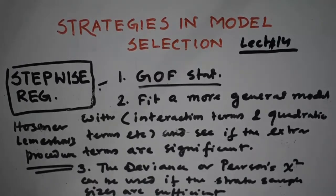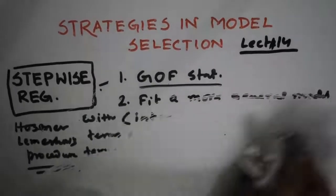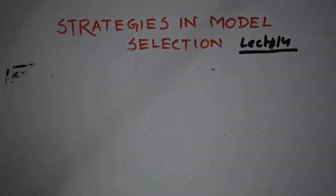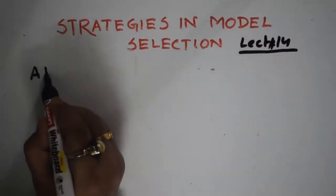So this is the method to select influential or important covariates or explanatory variables. Before ending this topic, I discuss another criterion that is AIC.